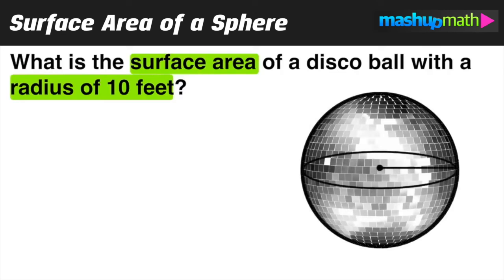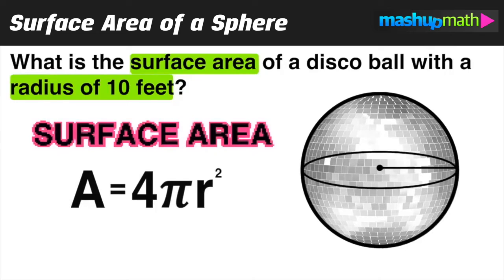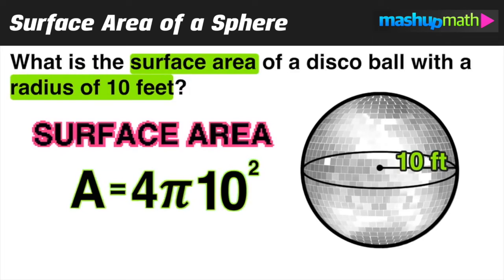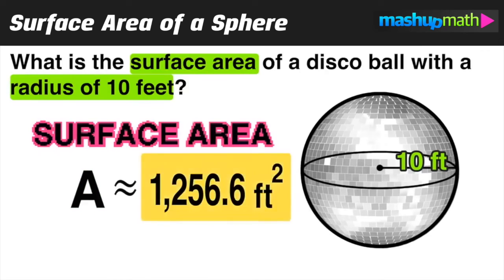A disco ball is a sphere, so we set up a diagram and note that we want to find surface area, using the formula A equals 4 pi r squared. The radius is equal to 10 feet, which we label on our diagram. We plug in r equals 10 and evaluate 4 pi times 10 squared, which is approximately 1,256.6 feet squared — representing the outside surface area of the disco ball.